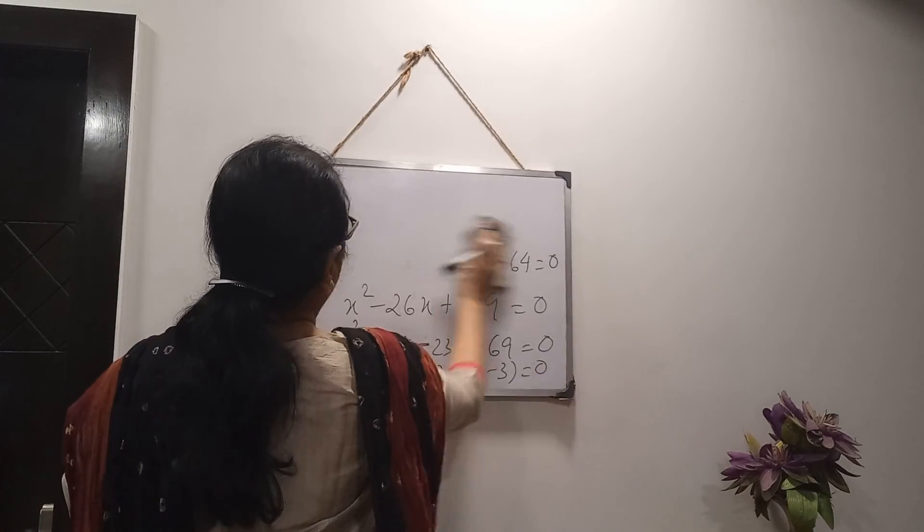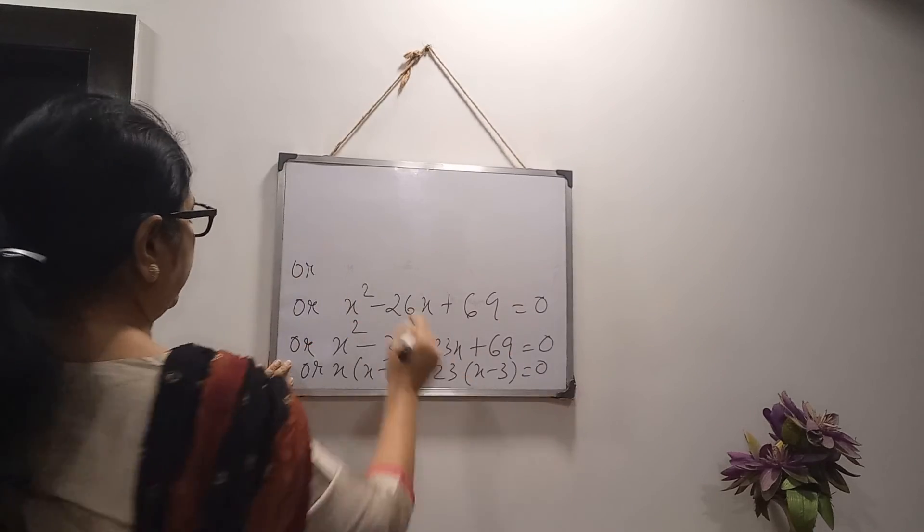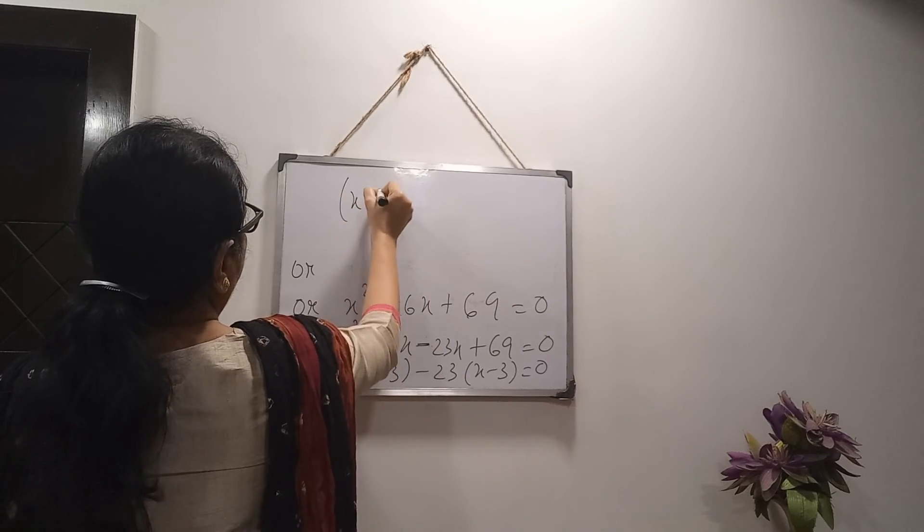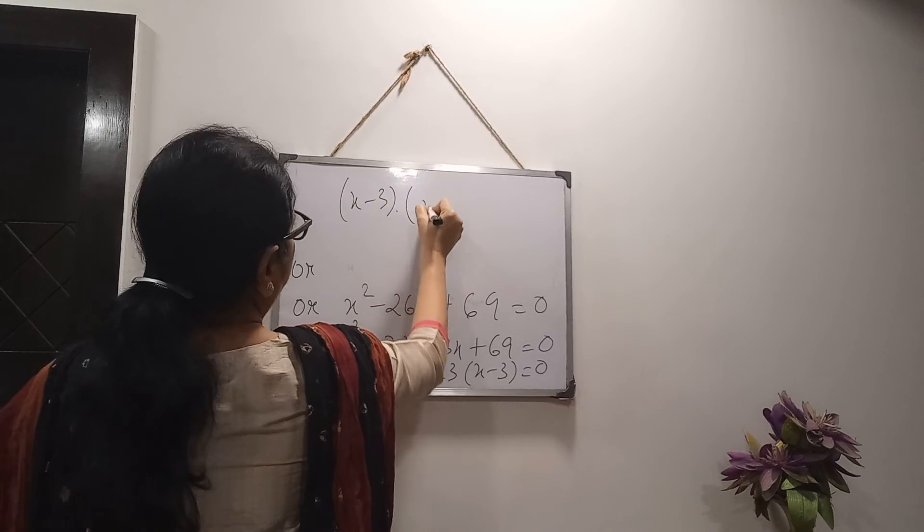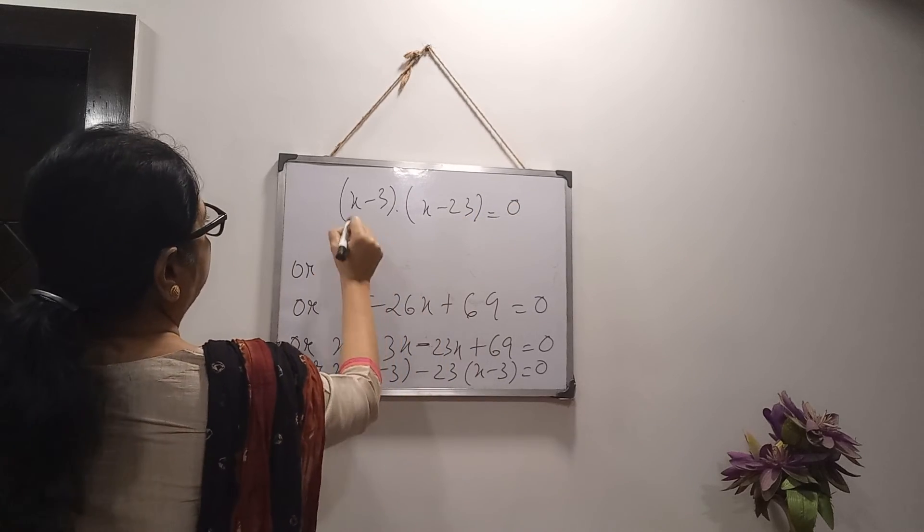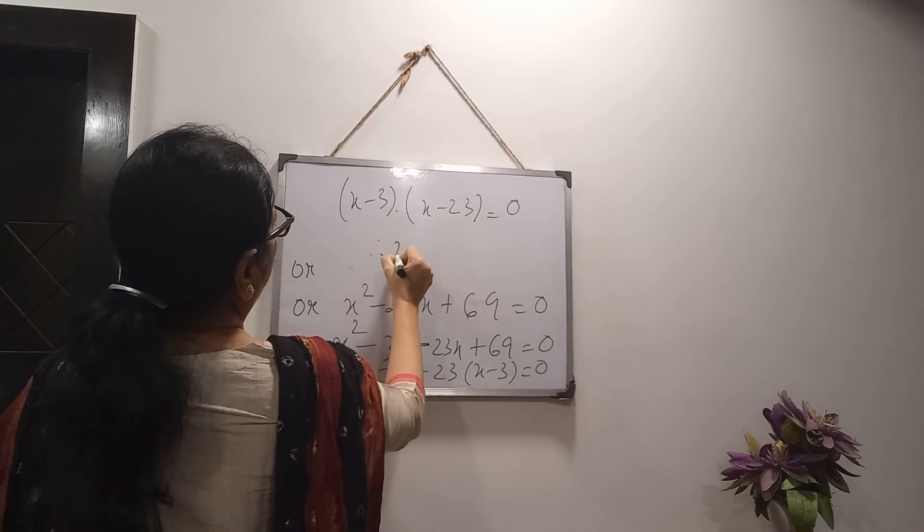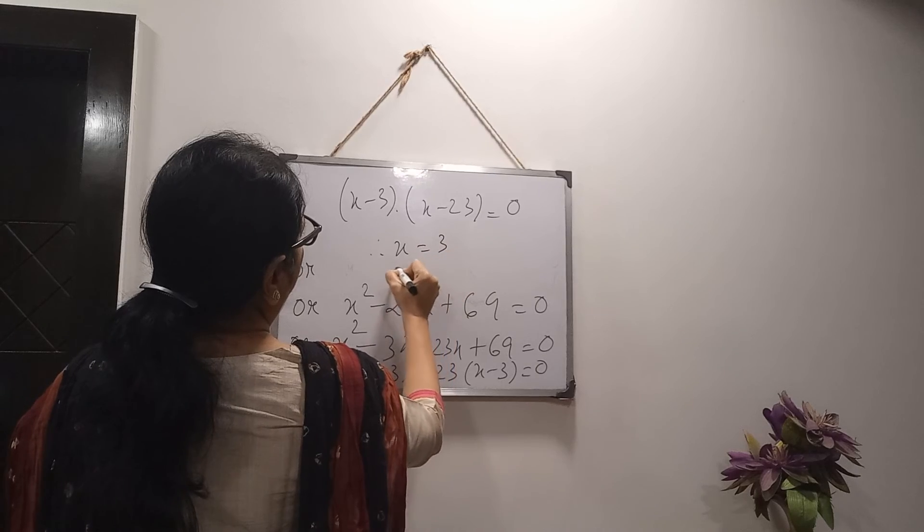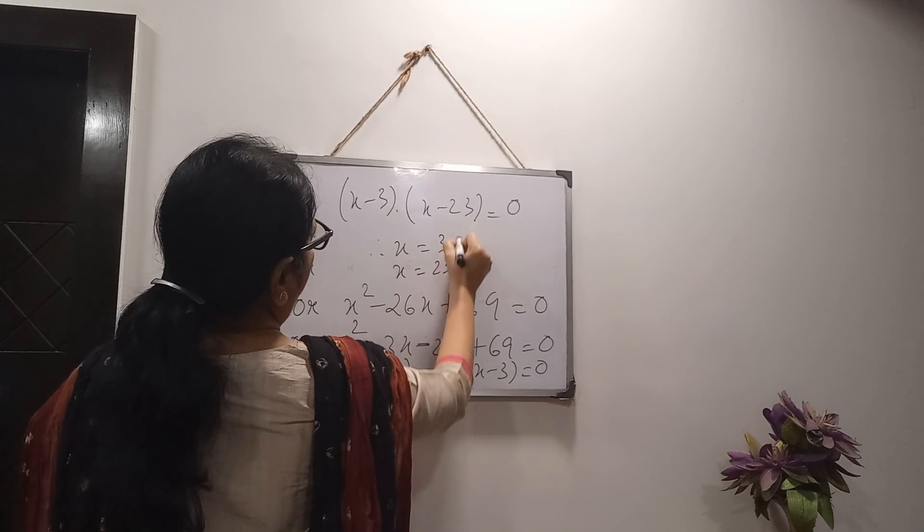Then, we are getting two factors. x minus 3 into x minus 23 equals to 0. From here, you will write in details. Either this or that. Therefore, the roots are coming. x equals 3 and x equals 23.